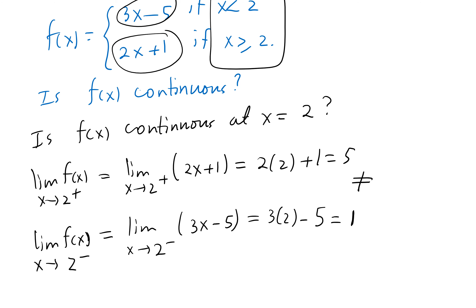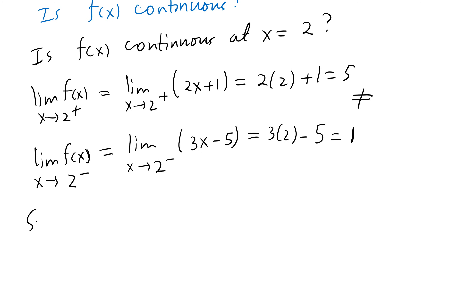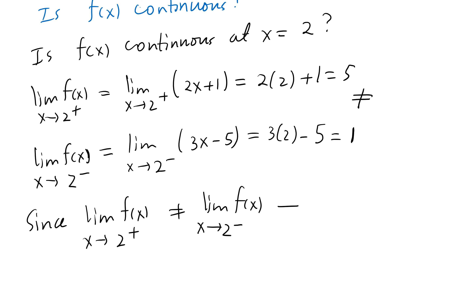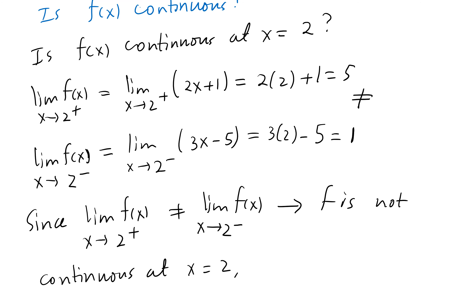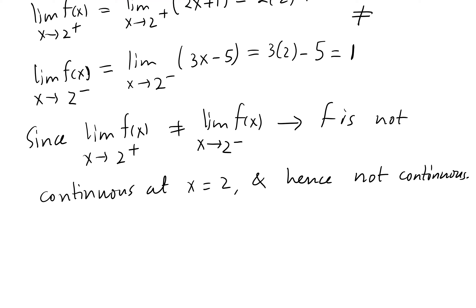Notice the two one-sided limits are not the same. Since the limit of f(x) as x approaches 2 from the right (which is 5) does not equal the limit as x approaches 2 from the left (which is 1), we say f is not continuous at x = 2. Since it's not continuous at 2, the function is not continuous overall.